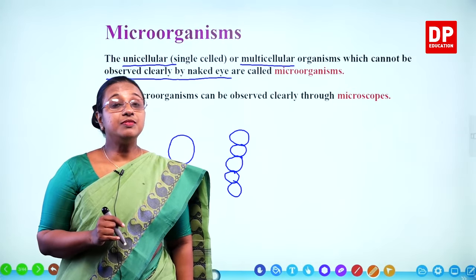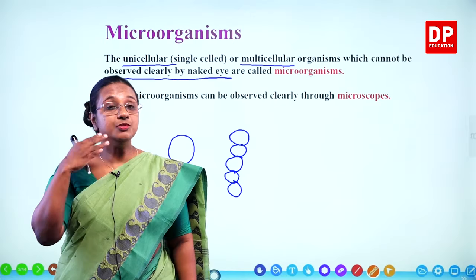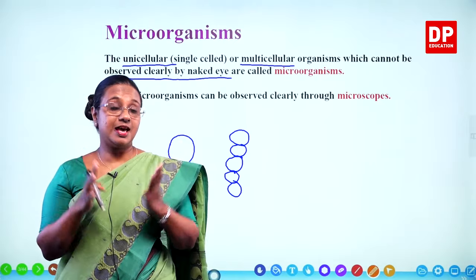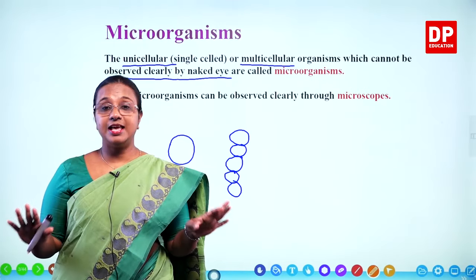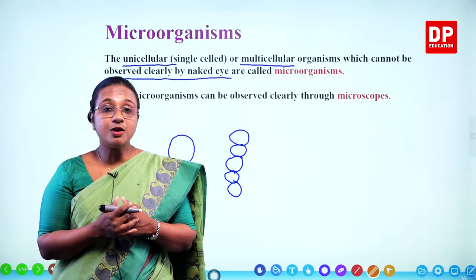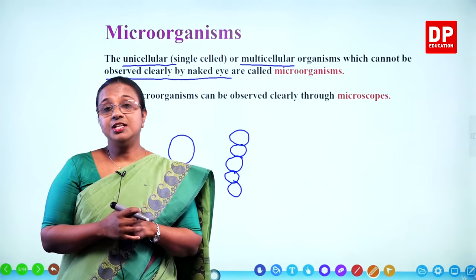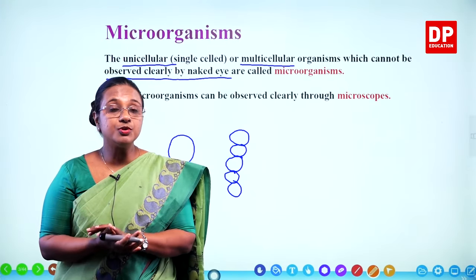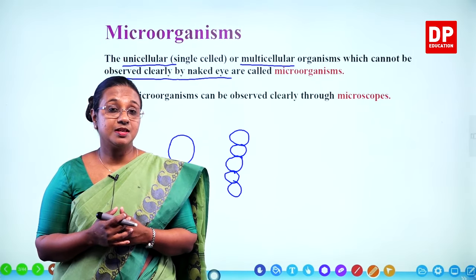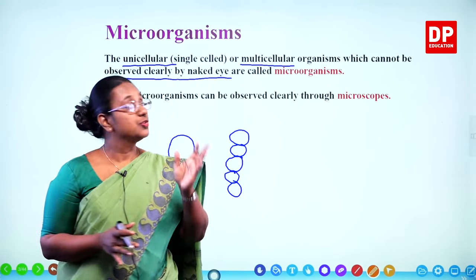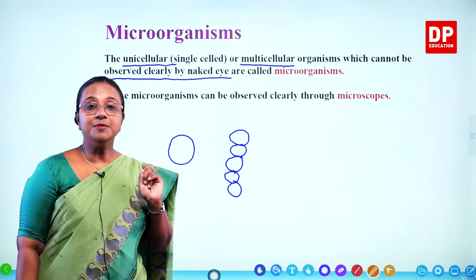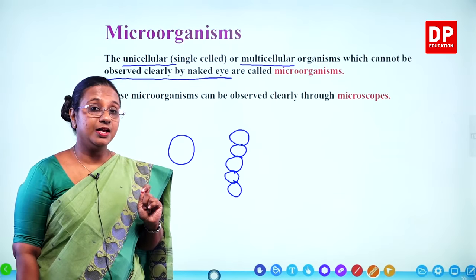What is the meaning of naked eye? Either you just look at it with your own eyes, or even if you are wearing spectacles, that is also considered the naked eye. As I am talking to you, there is air around you, you might be touching the table, you have books on it — all these can have microorganisms, but we can't see them. That is what we mean by cannot be clearly observed by the naked eye.